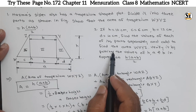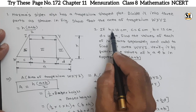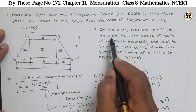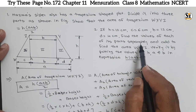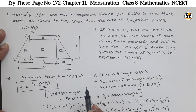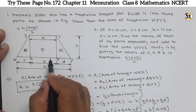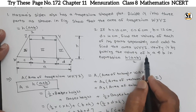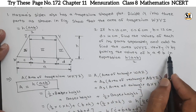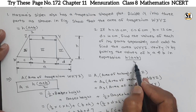Now see the second part, where the values of H, C, B, and D are given. What is asked? Find the value of each of its parts separately — meaning calculate A1, A2, A3 separately and add to find the total area of the trapezium. Also, we have to verify it by putting the values of H, A, B in the expression h into bracket (a plus b) divided by 2.